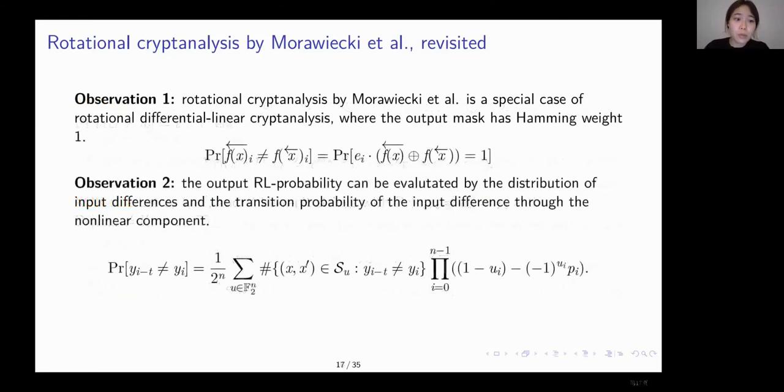We first observed that the rotational distinguisher on Keccak F was a special case of rotational differential linear, where the output mask is one bit. Then our second observation is that the probability of the output bit being unequal through a Boolean function can be predicted by the following formula, where in the summation, the first term shows the difference transition probability and the second term here gives the initial probability distribution of the input difference.